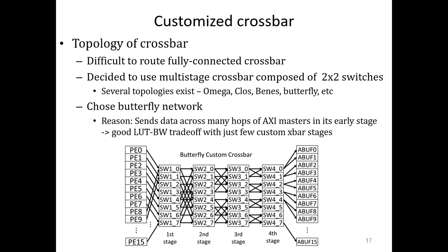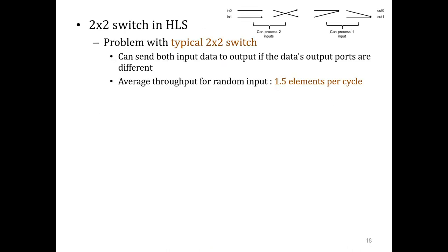When we implemented a 2x2 switch in HLS, the average throughput turned out to be only 1.5 elements per cycle for two output ports. A typical 2x2 switch can send both input data to the output ports only if the two data's destination ports are different. If they are the same, it can produce only one output.